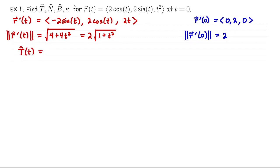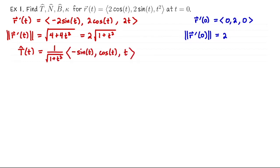Now we can write down T-hat in general. We take R prime of t and divide it by the speed as a function of t — we cannot use the specific quantities already computed. So we get 1 over the square root of 1 plus t² times the vector (-sine t, cosine t, t). At t equals 0, the unit tangent vector is (0, 1, 0).